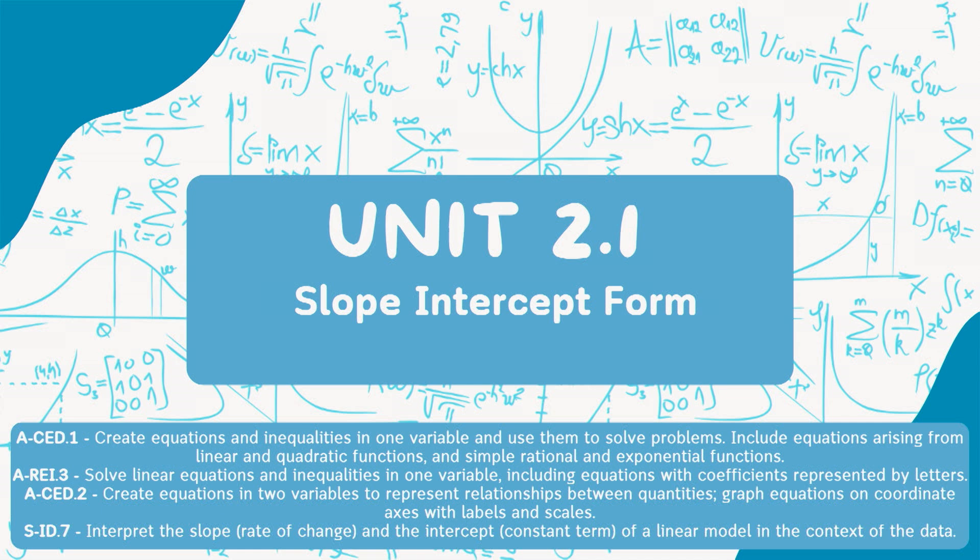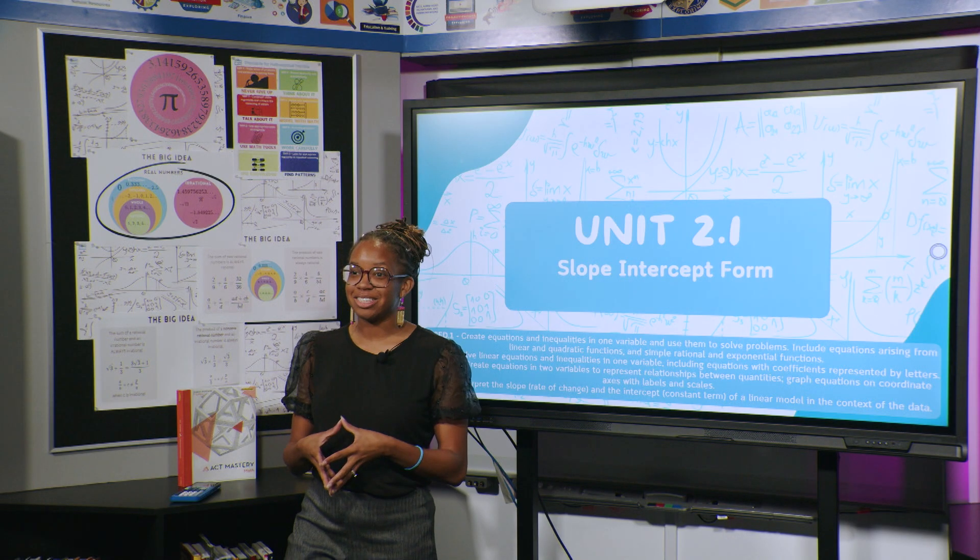A-CED.2, which says to create equations in two variables to represent relationships between quantities. Graph equations on coordinate axes with labels and scales. S-ID.7 says to interpret the slope, which is the rate of change, and the intercept, which is a constant term, of a linear model in the context of the data. So let's go ahead and get started.